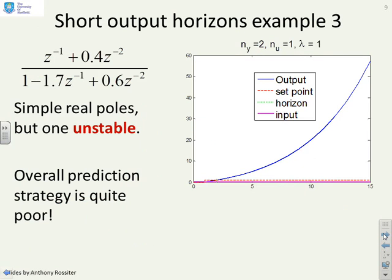Here's a third example. The difference with this example is that one of the poles is unstable. And what do you notice about the predictions in this case? Catastrophic. They're going off to infinity. They really are very poor indeed.